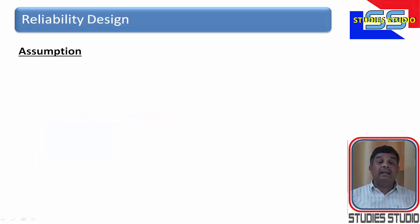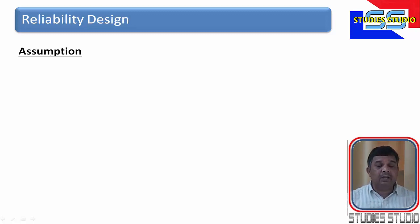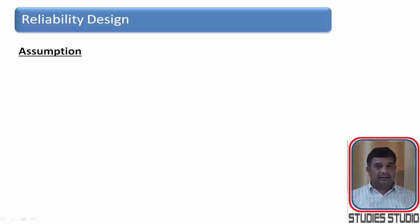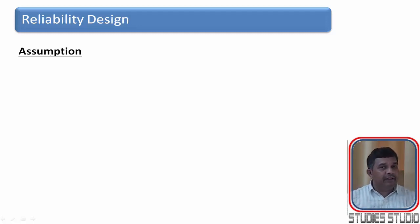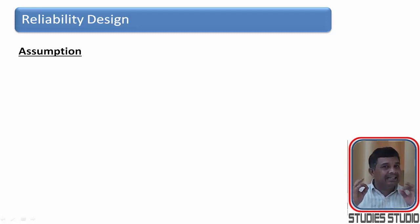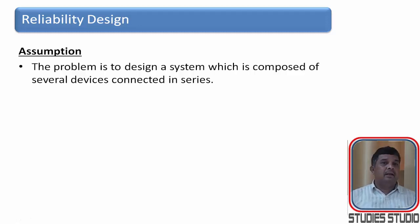Before going to understand what reliability is, let us try to understand it through a practical example. When we go to purchase something, we ask the shopkeeper: is it reliable? What is the meaning of that? It means we want to know how often it will work fine, or in other words how often it will fail. If it fails more often, it is less reliable.